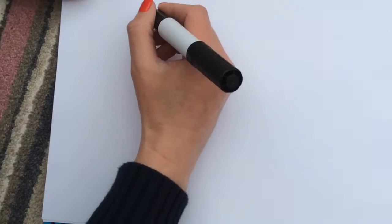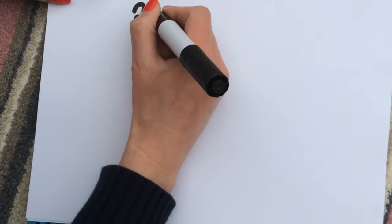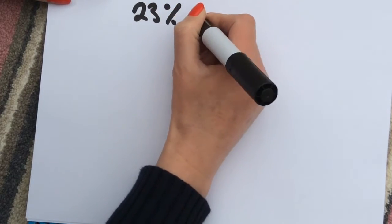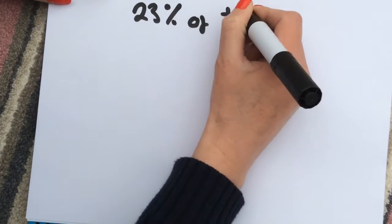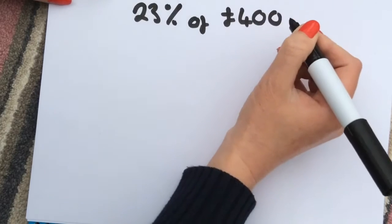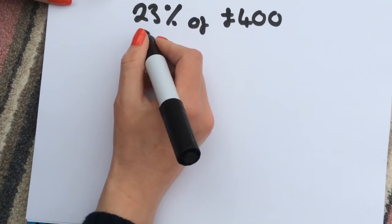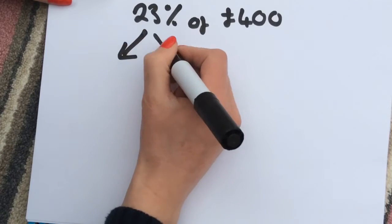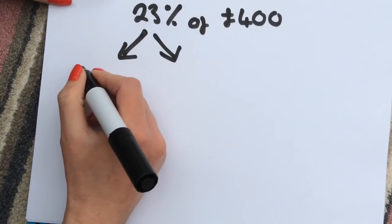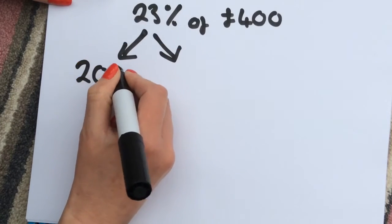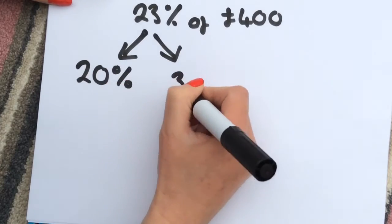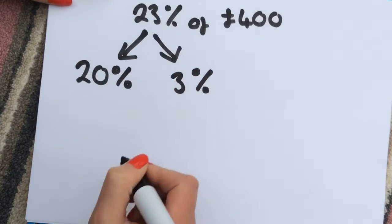I'm going to show you how to find 23% of £400. Take your percentage and you break it into tens and units. So it will be 20% for tens and 3% for units.